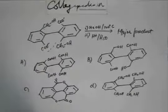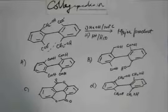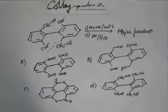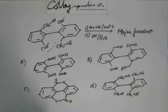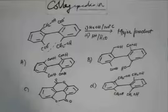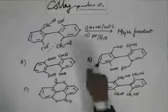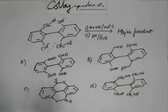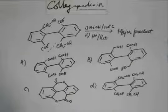Now, option A is absurd — all of them will not be converted into carboxylic acid. Two have to be carboxylic acid and two have to be alcoholic group. Similarly, option D is absurd — all of them will not be converted into alcohol either. So A and D are ruled out. Option B is what we have got, so option B seems to be correct.